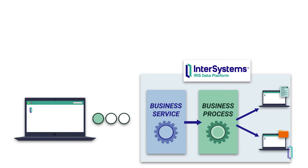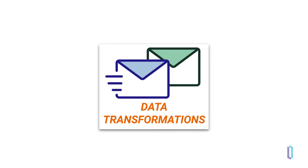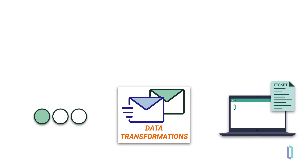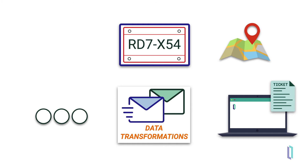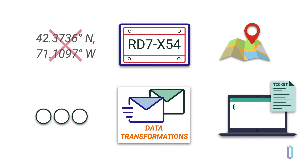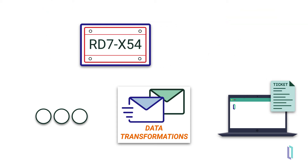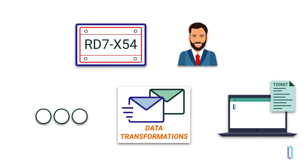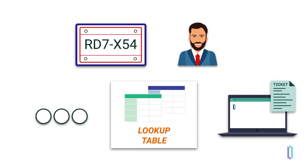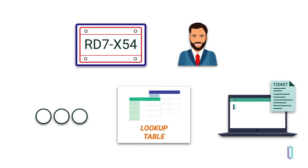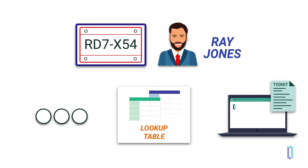The business process can also apply data transformations. For example, if the ticket application simply needs to know the license plate and the location, but doesn't need to know the actual coordinates of the violation, the business process can send only the information it needs. Or if the ticket application actually needs the name of the owner, the data transformation can apply a lookup table on the license to identify the name of the owner.